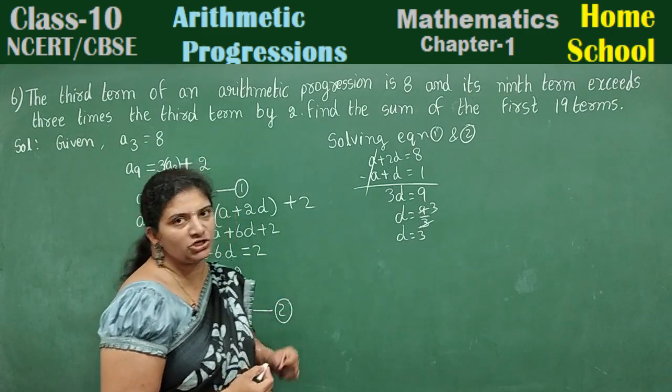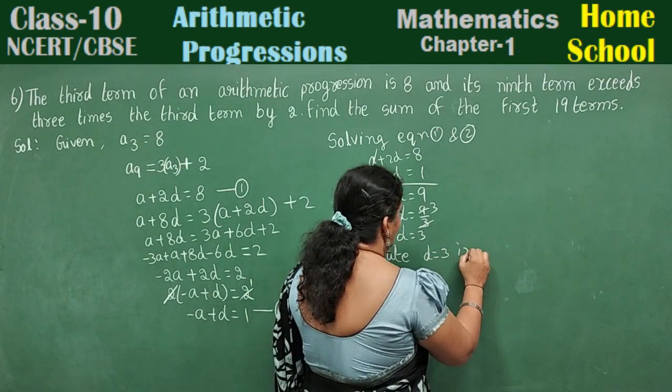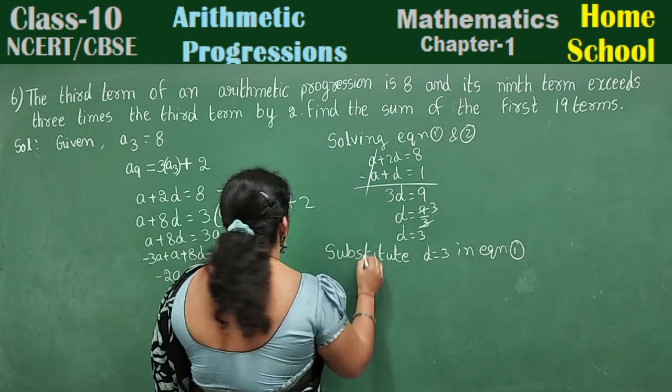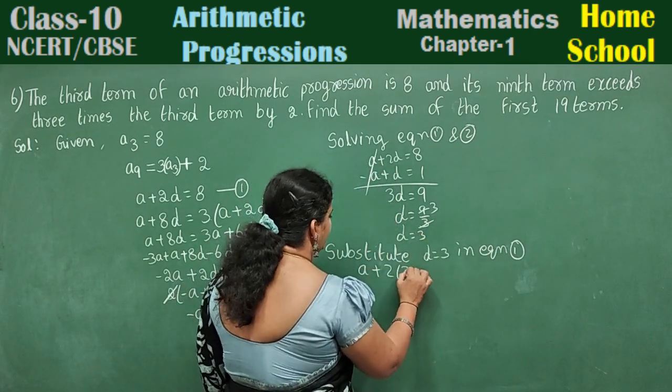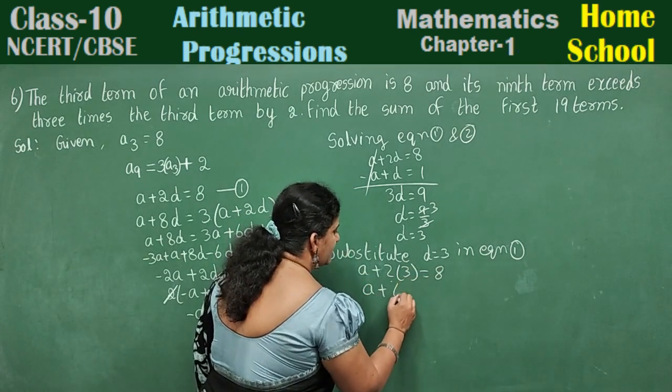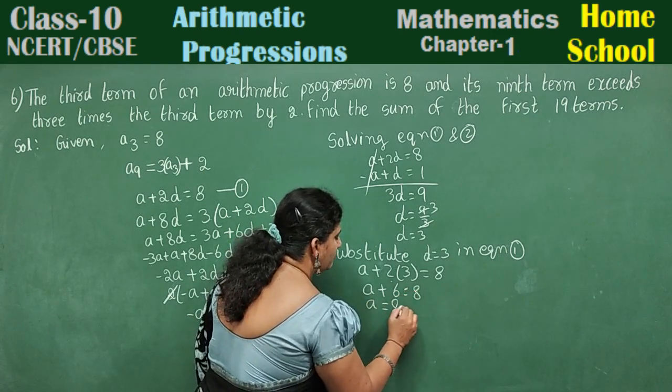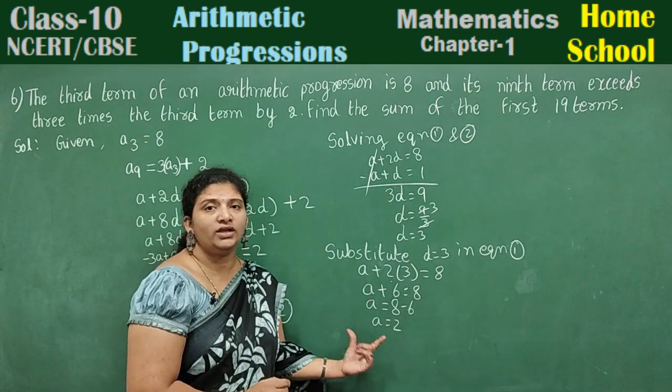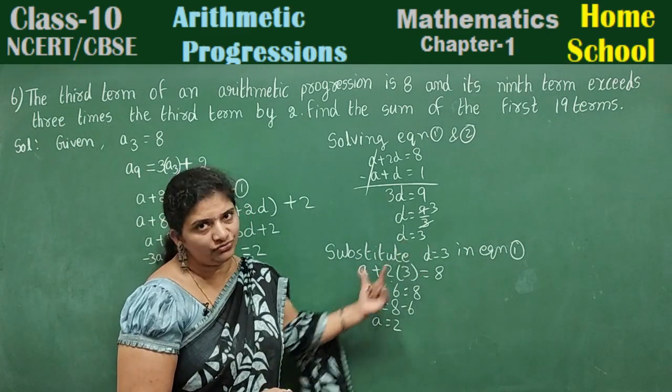This D value substitute in any one of the equations. Substitute D is equal to 3 in equation 1. That is A plus 2D, 2 into 3, is equal to 8. A plus 6 is equal to 8. Send 6 other side. A is equal to 2. We got first term A is equal to 2 and common difference D is equal to 3.